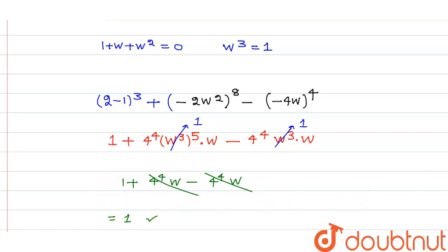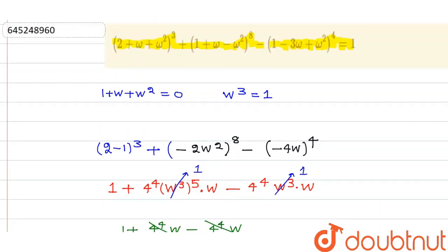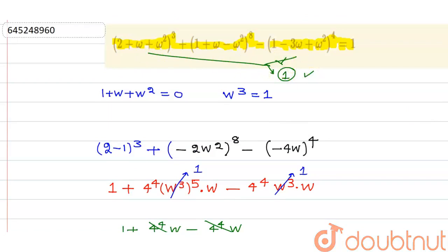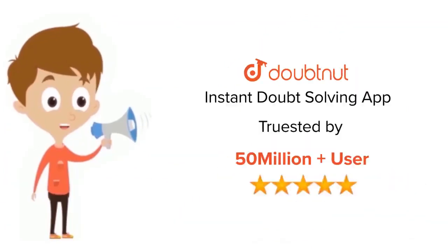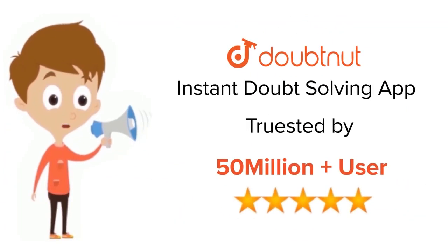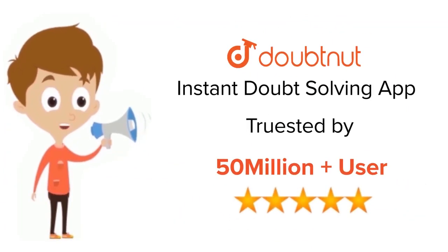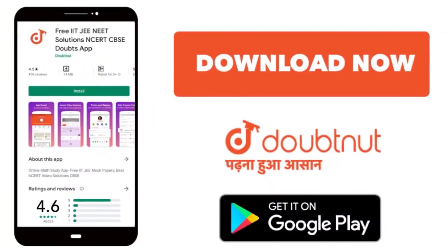So we have shown that this whole expression is equal to 1. Thank you. For class 6 to 12, IIT-JEE and NEET level — trusted by more than 5 crore students — download DoubtNut today.